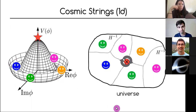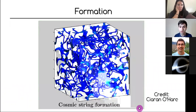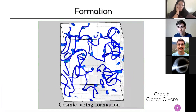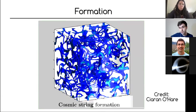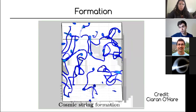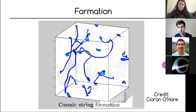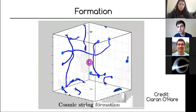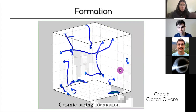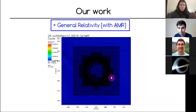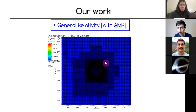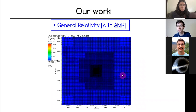People have simulated cosmic string formation for many years. Here is a simulation where the network forms and you can see close loops forming that collapse. However, most of these simulations are done on a lattice using flat space — no back-reaction effects — or in an expanding background without general relativity. They also usually have fixed mesh resolution and cannot improve resolution while the network is evolving.